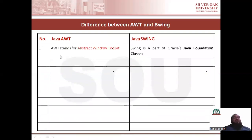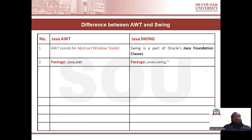First difference: AWT stands for Abstract Window Toolkit, while Swing has no full form — Swing is a part of Oracle Java Foundation Classes. As discussed, Java Foundation Class is a GUI-based framework and Swing is a part of it. Next, if you want to use AWT, the java.awt package is used. While if you want to implement a GUI-based application using Swing, the javax.swing package is used.